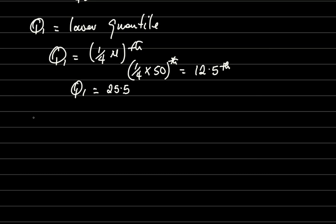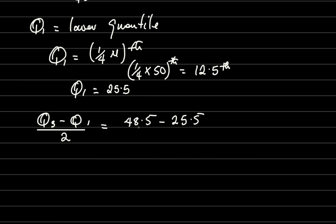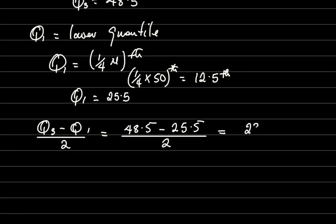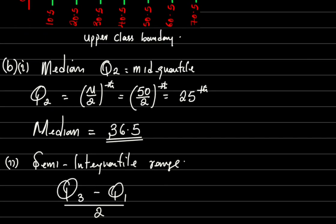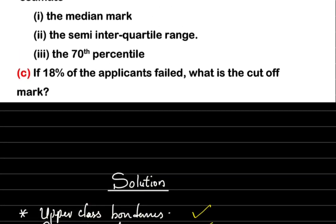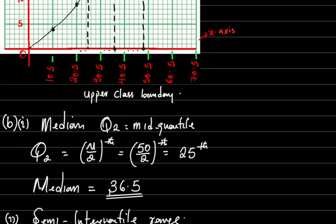Finally, the semi-interquartile range is (Q3 minus Q1) divided by 2, which is (48.5 minus 25.5) divided by 2, giving 23 over 2, which equals 11.5. So the semi-interquartile range is 11.5.